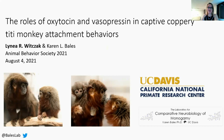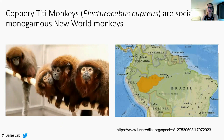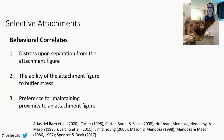Titi monkeys are socially monogamous new world monkeys that live in the Amazon Basin in South America. In the wild, titi monkeys live in pairs and small family units and exhibit bi-parental care. Studies have demonstrated that for infants and juveniles the primary attachment figure is the father, making them a unique system to study father-offspring relationships. Titi monkeys also display classic attachment behaviors such as separation distress, stress buffering, and proximity maintenance with their attachment figures.